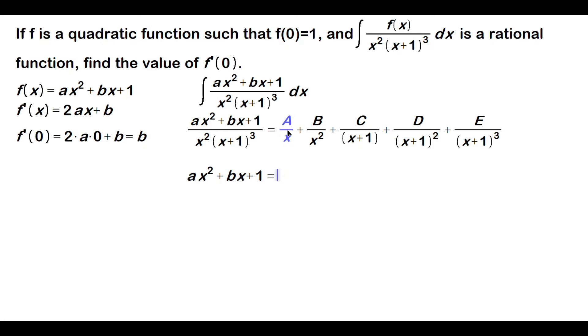That means A over x and C over x plus 1 have to go away. Why? Because when you antidifferentiate A over x, you get a ln. When you antidifferentiate C over x plus 1, you get a ln. It would break the fact that we are told that this antiderivative here is a rational function.